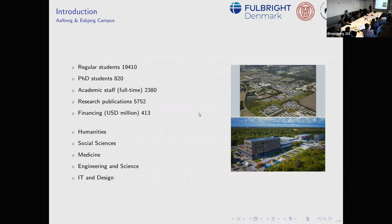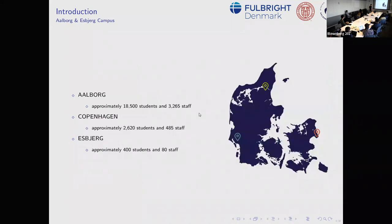The university has different fields: humanities, social sciences, medicine, and of course we are part of engineering, science, IT, and design — similar to Cornell with many different areas of research. Just to put it in perspective, I don't have a map of the world showing where Denmark is, but you can check.